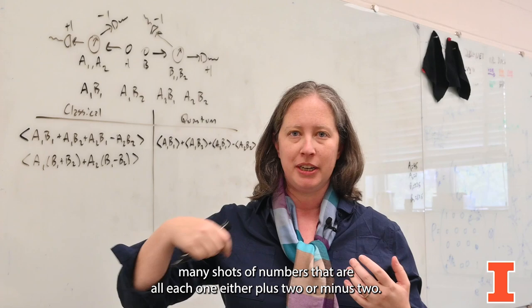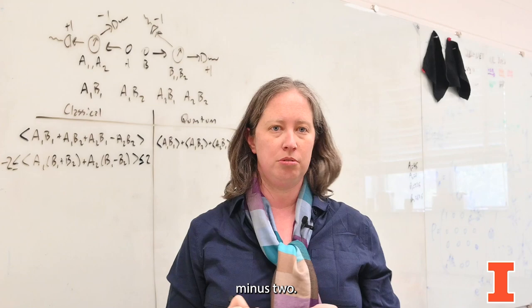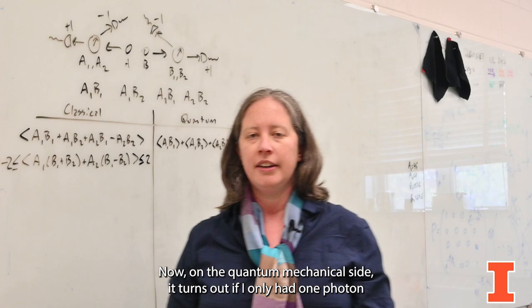If I take the average over many, many, many shots of numbers that are all each one either plus two or minus two, my average can be at most two and at least minus two. So this whole thing has to be between two and minus two.